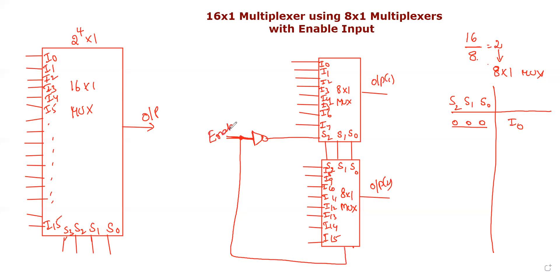This enable input is a single variable. When the enable input is equal to 0, the first MUX is active and passes the selected input. The enable input controls which of the two 8 by 1 MUXes is active at a given time.